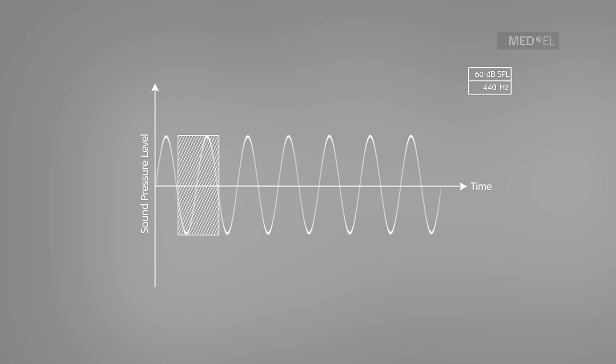The amplitude determines the loudness of a sound. An individual with normal hearing can hear sounds as low as 0 decibel sound pressure level and tolerate sounds as high as 120 decibel sound pressure level.